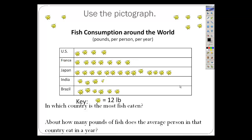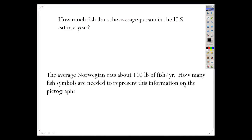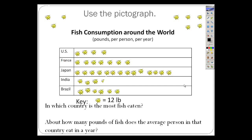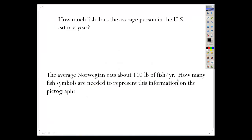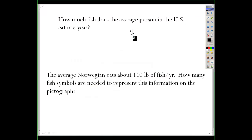How much does the average person in the United States eat in a year? Looking at the US row, there are four fish symbols. Each fish is worth 12 pounds, so four times 12 equals 48 pounds per year per person.